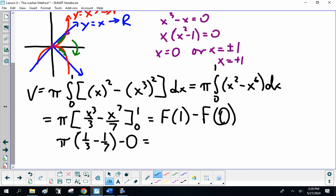Anyway, so that's 1/3 - 1/7. That is, let me think, π(7 times 3 - 3)/(3 times 7). So, it's 4π/21. Okay. So, that's the washer method.